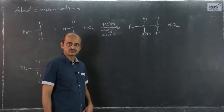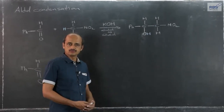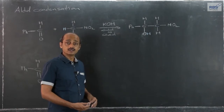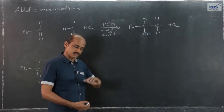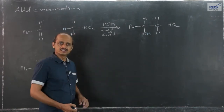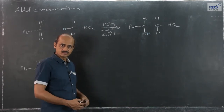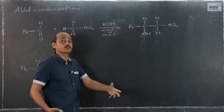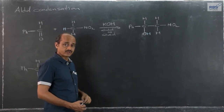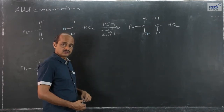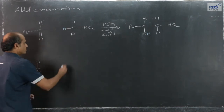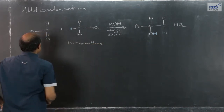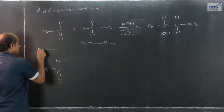Now we will consider an example which does not come directly under what we call aldol condensation, but whose mechanism and pattern match with an aldol-type reaction. Once we study the mechanism and conditions for aldol condensation in detail, it helps us understand many other reactions across various topics. This example comes under nitrogen-containing compounds — specifically nitroalkanes. Here we take nitromethane reacting with an aldehyde, which is benzaldehyde.